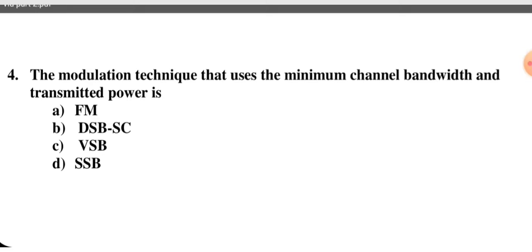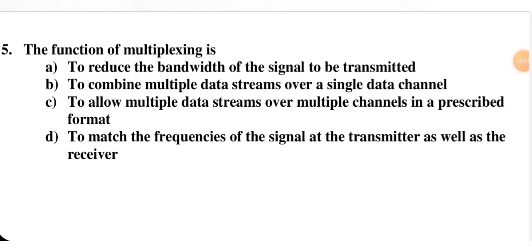Next question: the modulation technique that uses minimum channel bandwidth and transmitted power is FM, DSB-SC, VSB, or SSB-SC. FM (frequency modulation) if wideband has many sidebands increasing bandwidth. DSB-SC is double sideband suppressed carrier with two sidebands. VSB is vestigial sideband with one full sideband and a vestigial part of the other. SSB-SC is single sideband — only one sideband, so bandwidth and power are reduced. D (SSB-SC) is the right option.